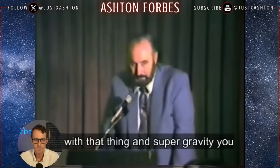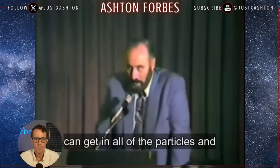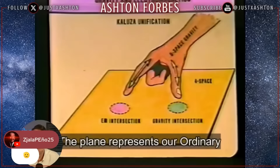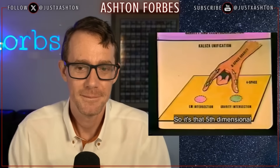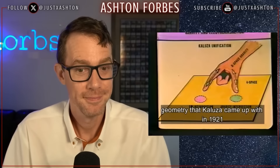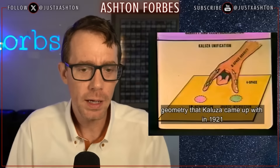And the physicists became very excited. With supergravity, you can get in all of the particles and everything we know in physics in a single unified theory. The plane represents our ordinary world; the hand represents an extra dimension — that fifth dimensional geometry that Kaluza came up with. Now that we understand we are on this flat surface but there's an extra dimension we don't see, where's the energy coming from? The energy is coming from this extra dimension we don't see. This is where electricity is coming from.